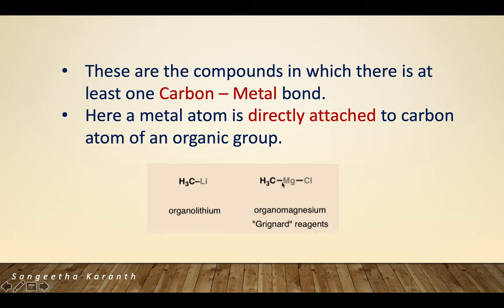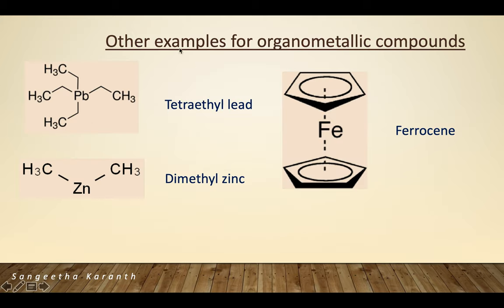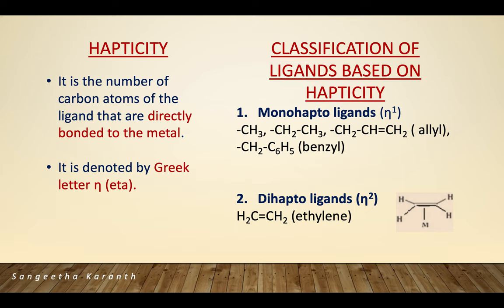In Grignard reagents, magnesium is directly linked to carbon. Some other examples of organometallic compounds include tetraethyl lead, where lead is directly coordinated with four ethyl groups; dimethyl zinc; and ferrocene, where iron is sandwiched between two cyclopentadienide rings.